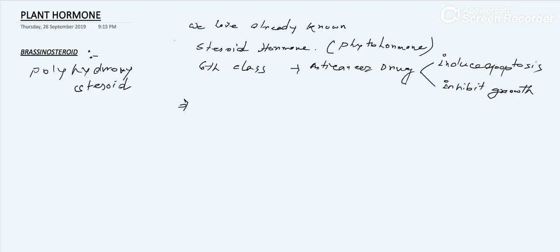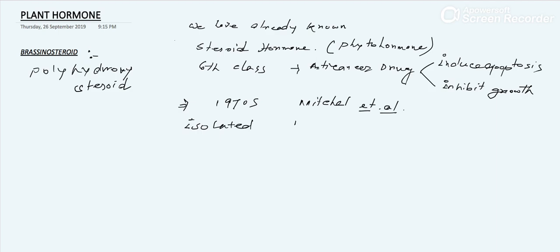This hormone was first discovered or explored in the 1970s by a scientist known as Mitchell et al. Brassinosteroid was first isolated in 1979, and it was isolated from the pollen of Brassica napus.